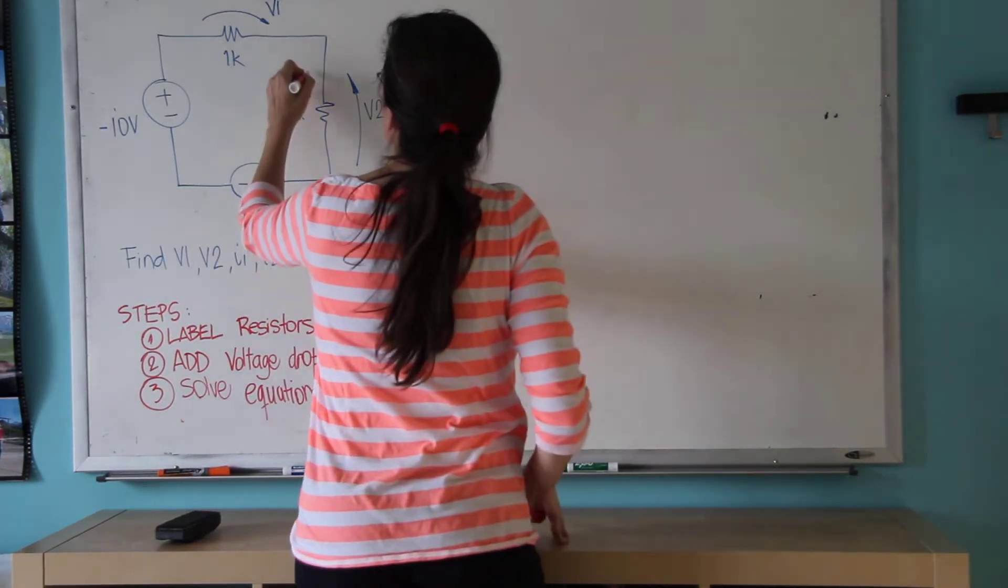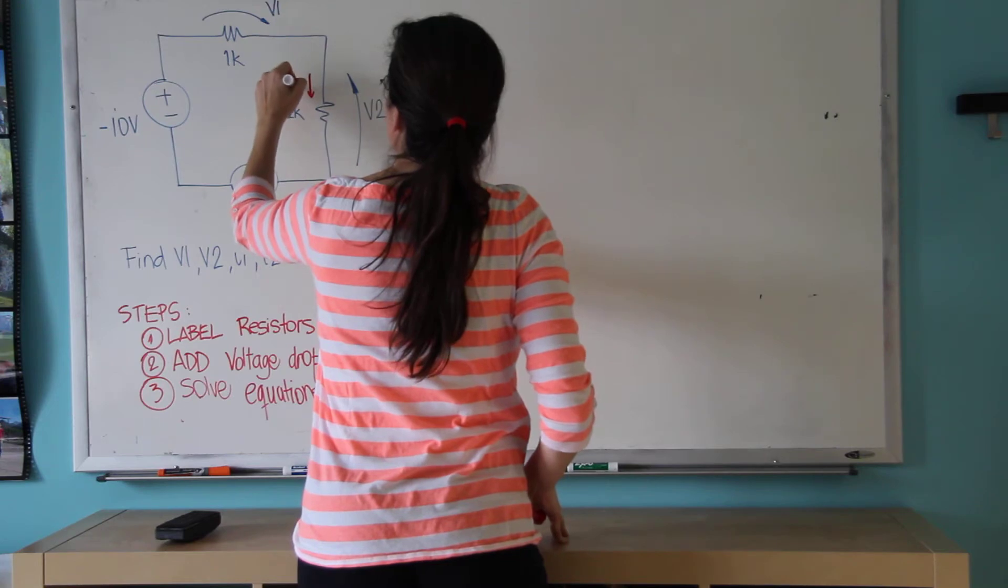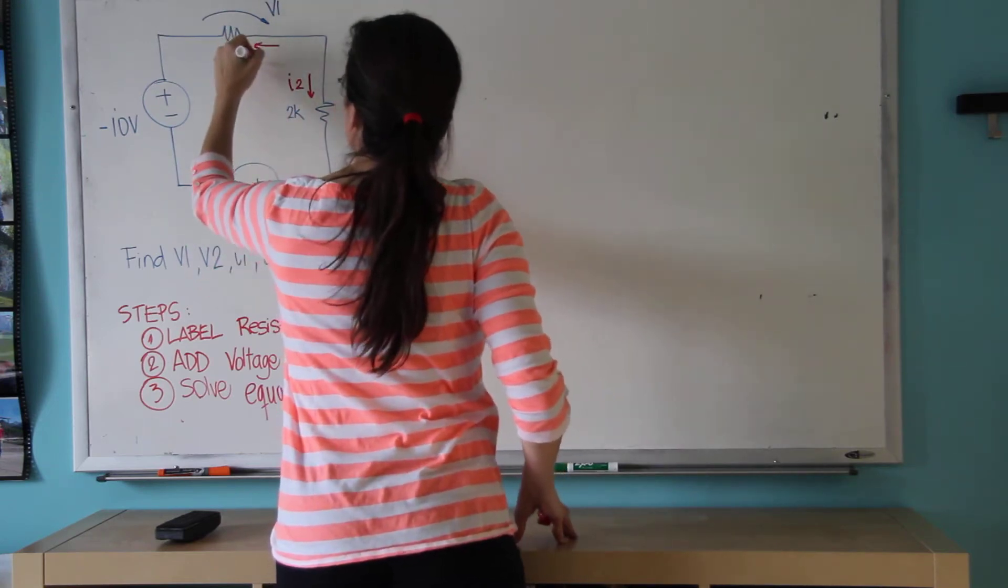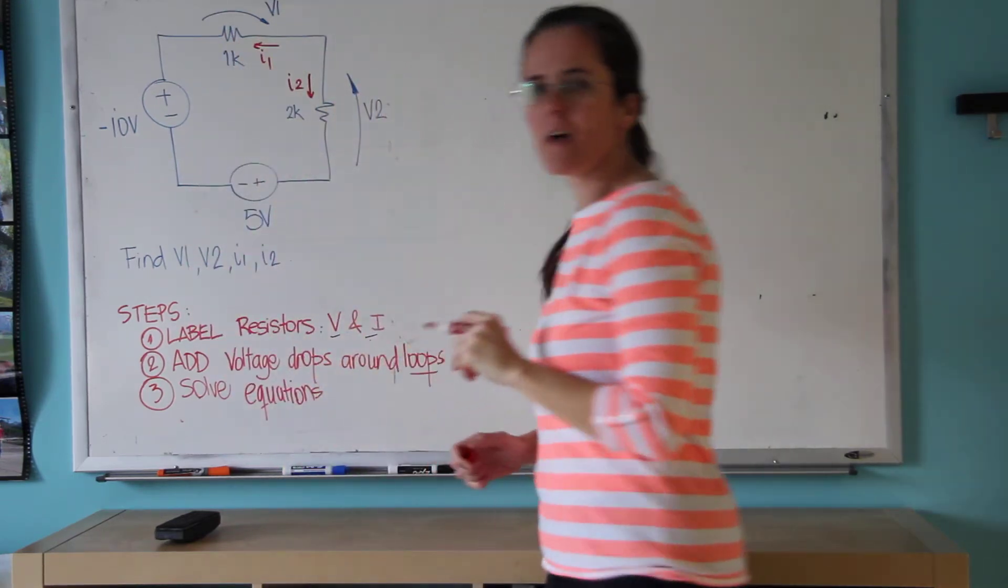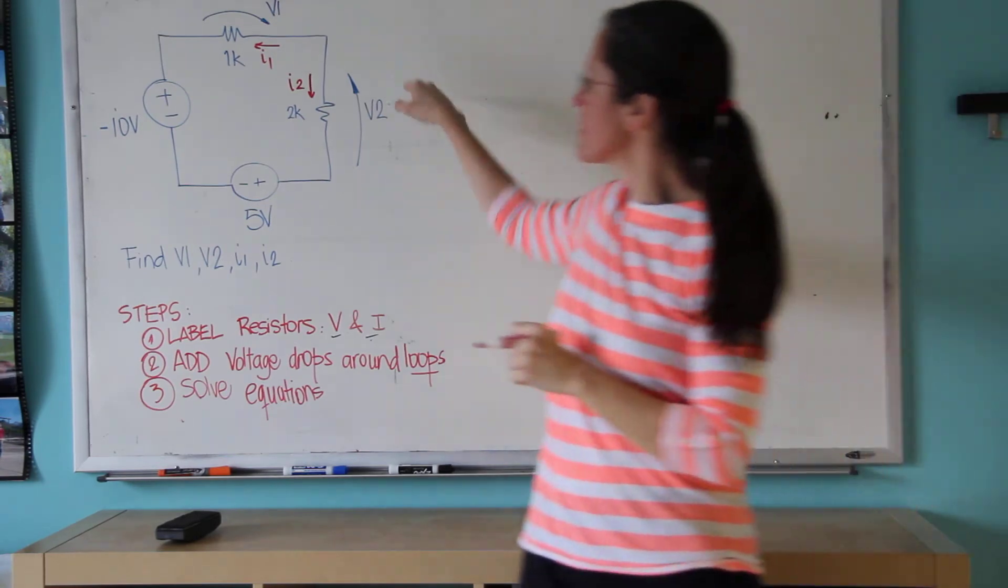So I'm going to label at least the current. This current I2 is going down. This current I1 is going to the left. The reason is V1 is there and V2 is here.